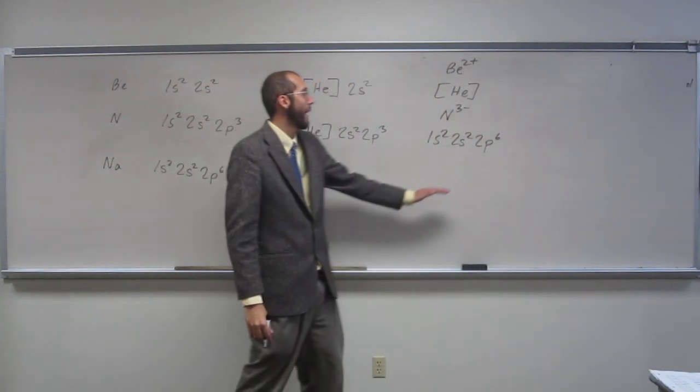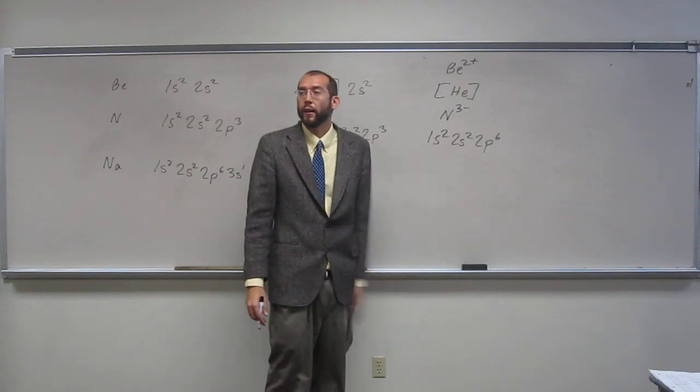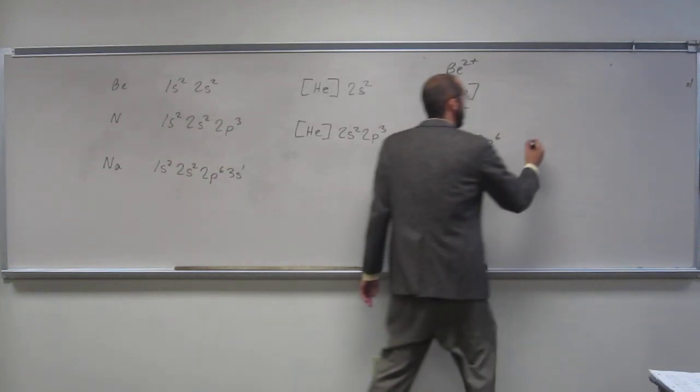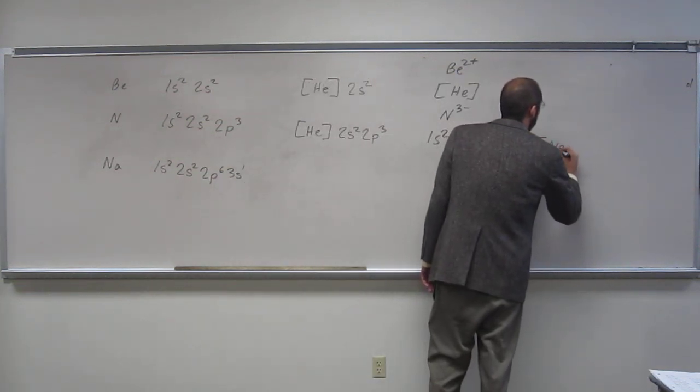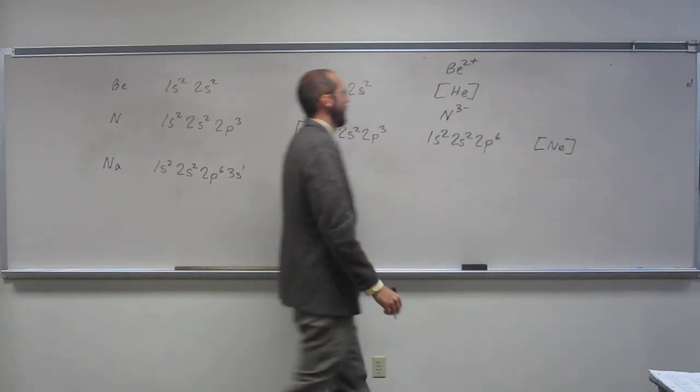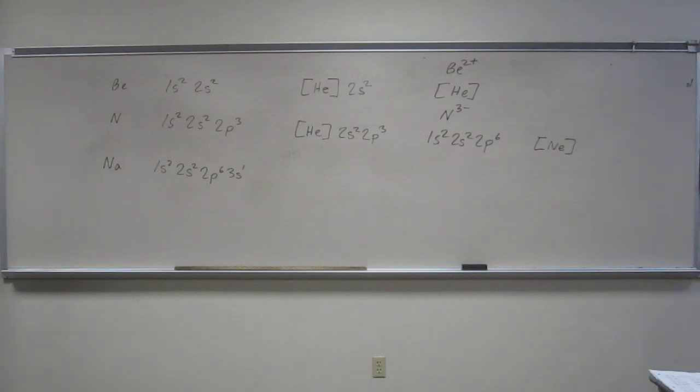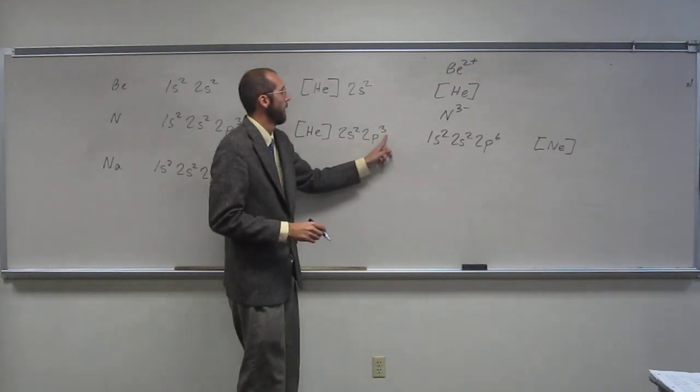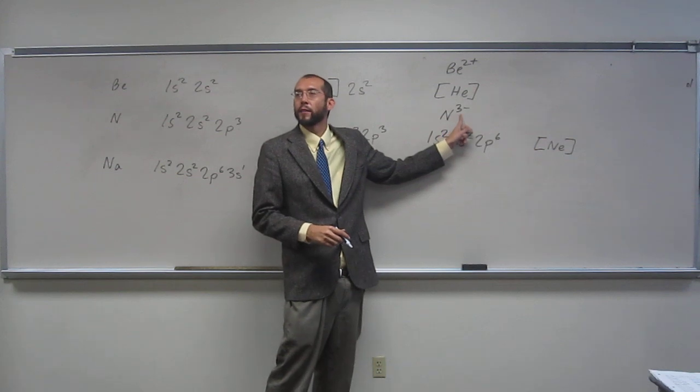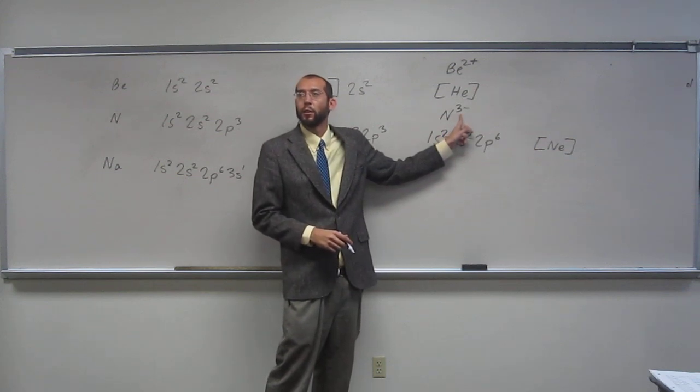So what's the noble gas electron configuration for that? Neon. Wait, why are you adding three? I'm confused. Why would you add three? Because you add three more electrons here, right, and so if we have this, what does that mean? We've added three more electrons.